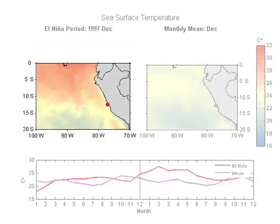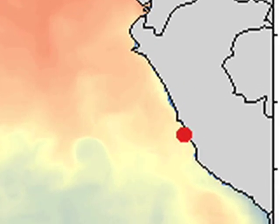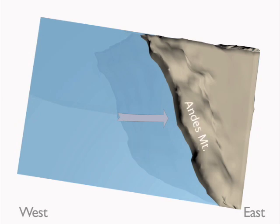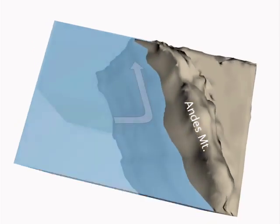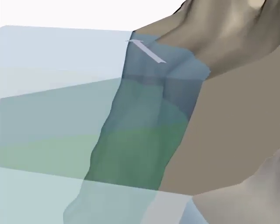These warm ocean conditions serve to increase the temperature on land. Over time, the land temperature warms faster than the ocean, creating a temperature differential that causes strong onshore eastward winds. The Andes mountains, which are located along the west coast of South America, obstruct the eastward winds and force them northward. These northward winds strengthen the upwelling process at the Peruvian coast.